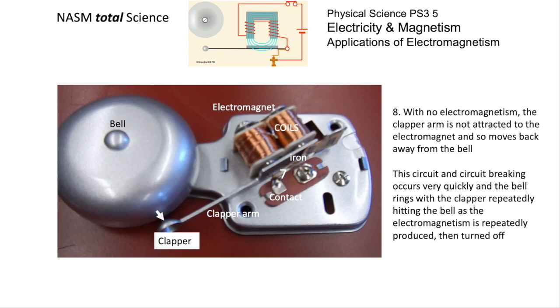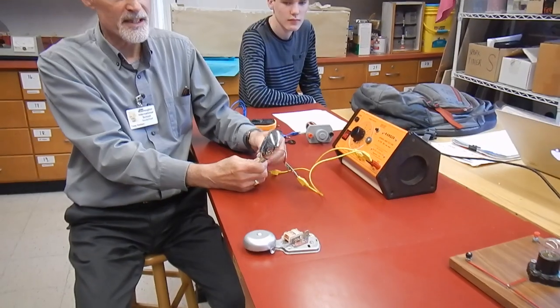So you haven't got an electromagnet, so the clapper then moves backwards to its initial position away from the bell. That reconnects the contact, which then produces an electromagnet, and this cycle will repeat itself.